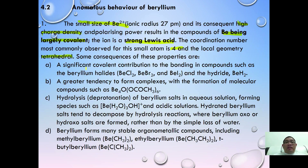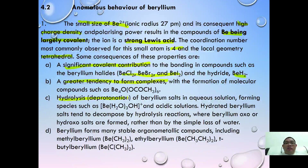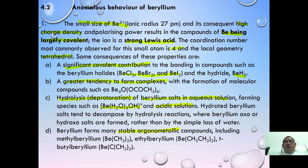As consequences of these properties: beryllium halides — beryllium chloride, bromide, and iodide — are all covalent, and the hydride is also covalent. Beryllium also has a greater tendency to form complexes. Importantly, beryllium salts hydrolyze in water to give [Be(H₂O)₃OH]⁺, producing acidic solutions. Beryllium is also well known for forming stable organometallic compounds such as beryllium methyl, beryllium ethyl, and tert-butyl beryllium.